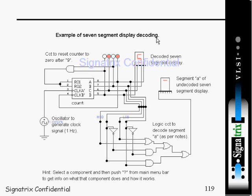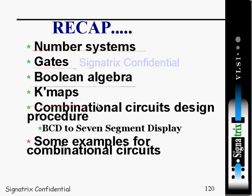An example of seven segment decoding: you can see a seven segment decoder displaying the digit 5. There is one oscillator providing a clock to the chip, and after decoding we get the expected result. So in summary, we have covered: number systems, logic gates, boolean algebra, K-maps, combinational circuit design procedures, BCD to seven segment display, and some examples of combinational circuits.